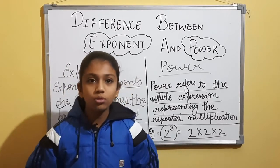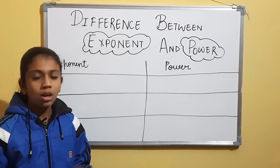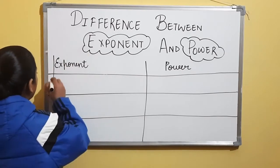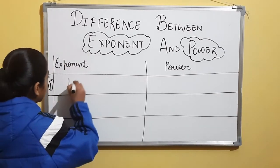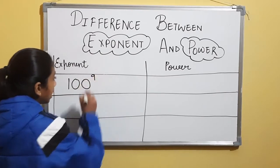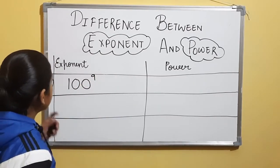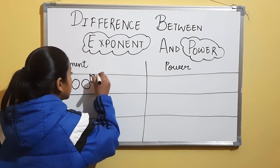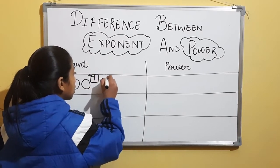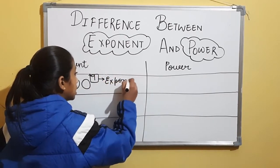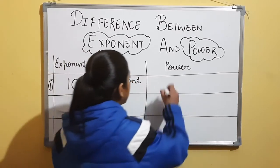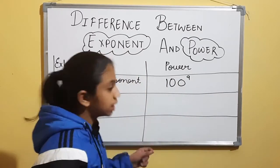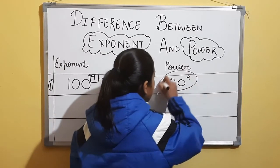Let's move to some more examples to understand the difference between exponent and power. First example: 100 raised to the power 9. What is the exponent? The exponent is 9. What is the power? The whole expression — 100 raised to the power 9 — is the power.